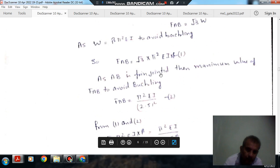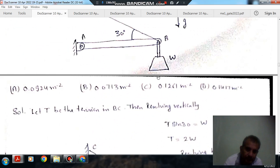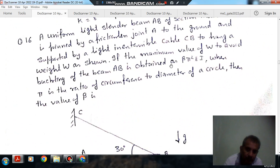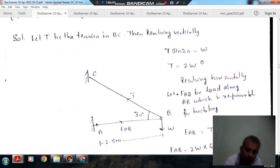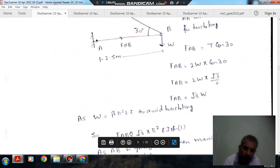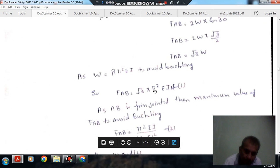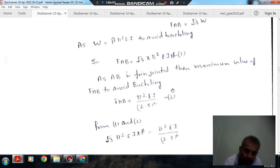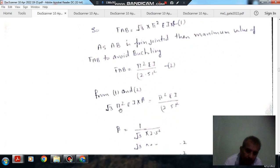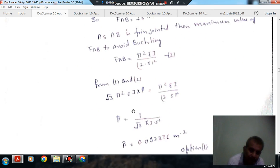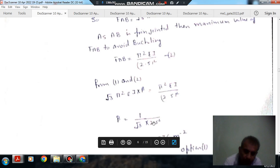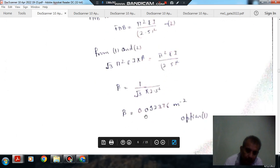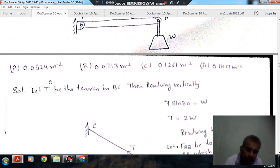So equating this 1 and 2, because W is given as beta pi square EI, and FAB is your root 3W, so FAB will be your root 3 pi square EI beta. So equating, and this is a buckling load, so FAB root 3 will get the value of beta, because EI will cancel, pi square will cancel out, and we will have beta is equal to 1 by root 3 times 2.5 square, so answer will be 0.092376 meter per square. Option A is the right answer.